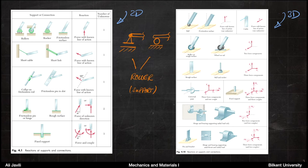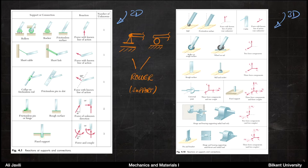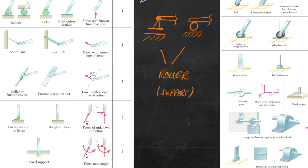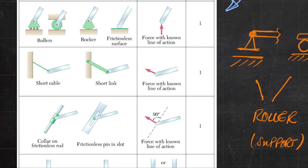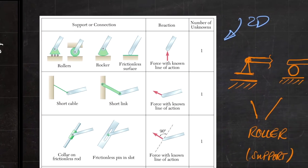There are two tables showing the supports in the book. The left table is in 2D and the right table is in 3D. These are the well-known supports you will see quite frequently throughout the course. Some of them are more familiar, some less familiar, but let's go through them fairly quickly.